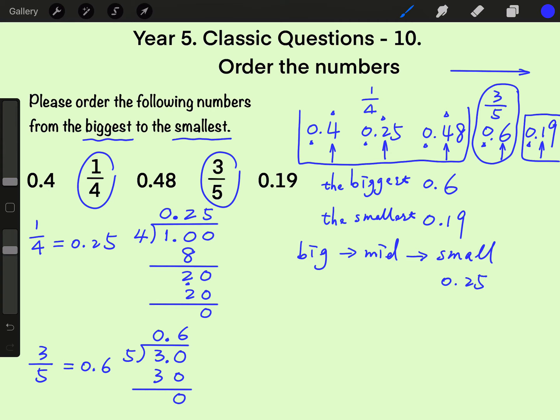Next, let's compare 0.4 and 0.48. The same number on the tenth position, so we need to move down to the hundredth position. First, let's add a 0 on the hundredth position. Now, on the hundredth position, 8 is bigger than 0. So 0.48 is bigger than 0.4.